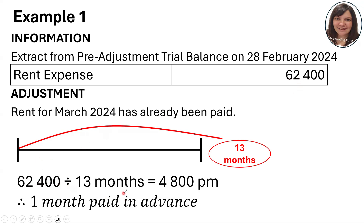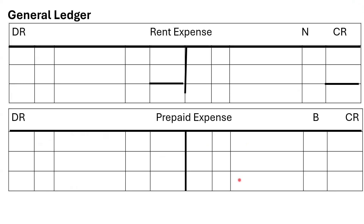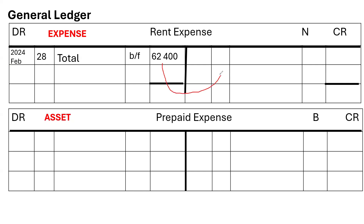So we've paid for 13 months. I take 62,400 divided by 13 months, which is 4,800 per month for rent, and we have one month paid in advance. Rent expense is an expense — expenses always debit. The balance on the debit side is 62,400. Included in that total we have one month of rent that needs to be taken out, because we only want 12 months. So I take out that one month of rent expense.